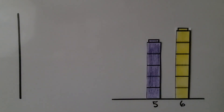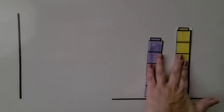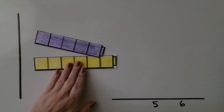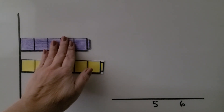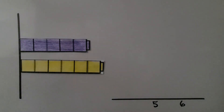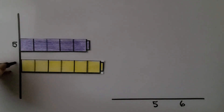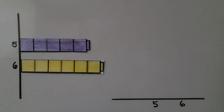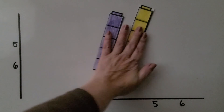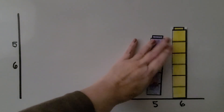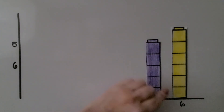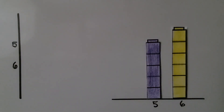We changed them from laying down to compare their lengths, and the purple one was shorter because it still had five cubes and the yellow one still had six cubes. The number of cubes didn't change — the only thing that changed was the direction we put them. Now they're standing up: five cubes for the purple one, six cubes for the yellow one. The purple cube tower is still shorter.